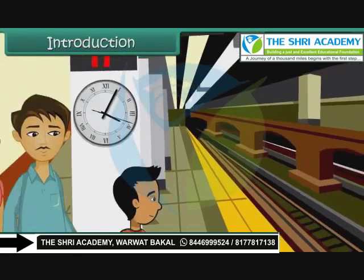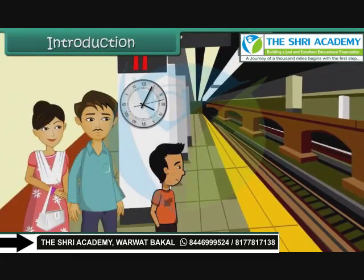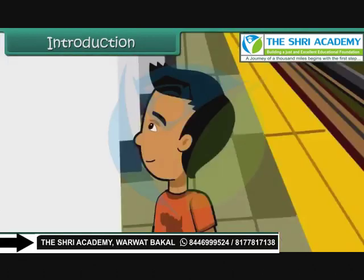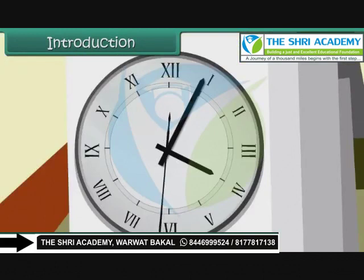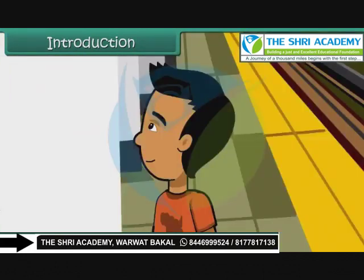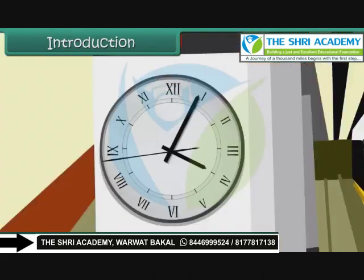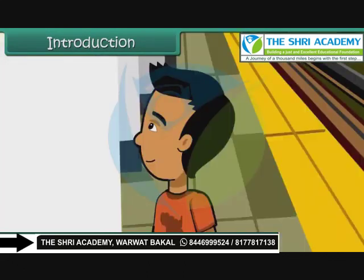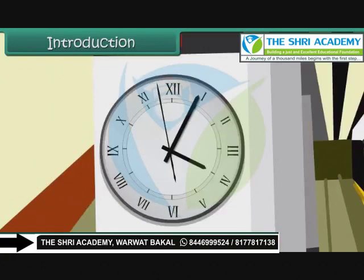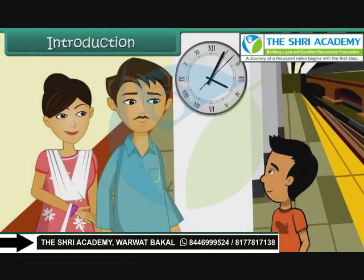Abhishek is at the railway station with his parents. They are going for summer holidays to Mathura. Their tickets are reserved on the 4:30 train. Abhishek is looking at the huge railway clock and wants to find out when the train would start. But he is unable to read the clock as all the numbers are written using Roman numerals. Seeing Abhishek grow restless, his father decides to teach him Roman numerals and their usage. Let us also learn to read and write numbers using Roman numerals.